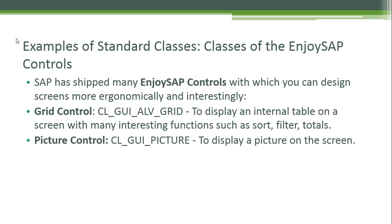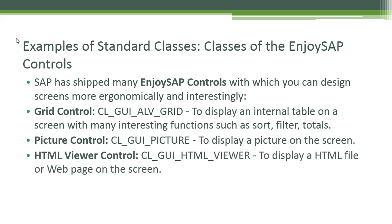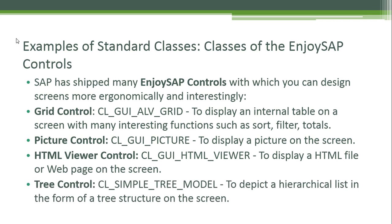We also have the Picture Control — the class CL_GUI_PICTURE — to display a picture on the screen. Then there is the HTML Viewer Control — the class CL_GUI_HTML_VIEWER — used to display an HTML file or web page on the screen. So you can add pictures and even display a web page on a SAP screen. Finally, the Tree Control class is used to depict a hierarchical list in the form of a tree structure on the screen, just like the trees we navigated to look at the classes. Tree controls are very useful for organizing objects.